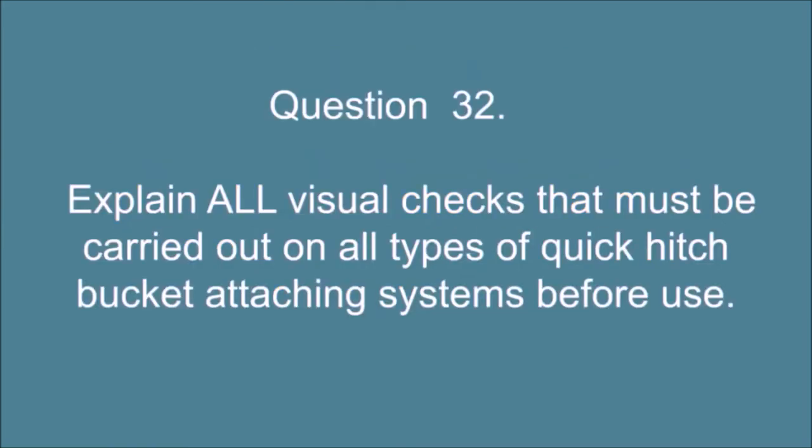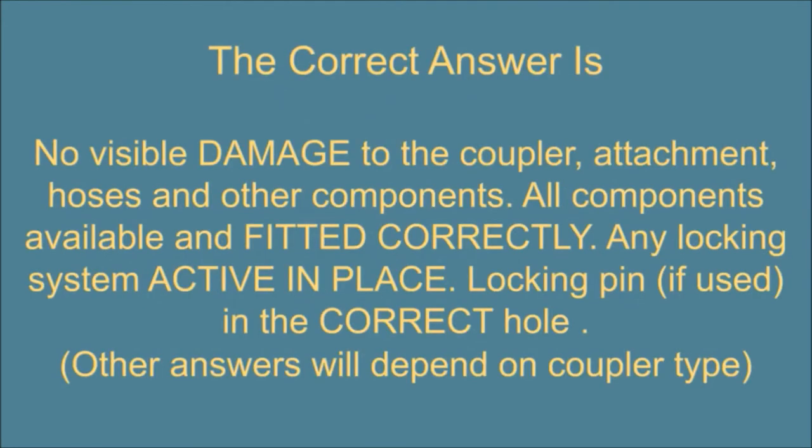Question 32. Explain all visual checks that must be carried out on all types of quick hitch bucket attaching systems before use. The correct answer is: no visible damage to the coupler, attachment, hoses, and other components. All components available and fitted correctly. Any locking system active in place. Locking pin, if used, in the correct hole. Other answers will depend on coupler type.